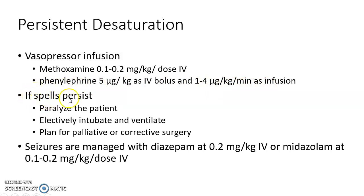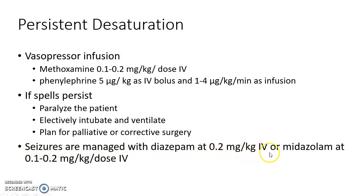If the cyanotic spell still persists, we have to paralyze the patient, electively intubate and ventilate, and plan for palliative or corrective surgery. Seizures during cyanotic spells are managed with diazepam at 0.2 mg/kg IV or midazolam at 0.1 to 0.2 mg/kg per dose IV.